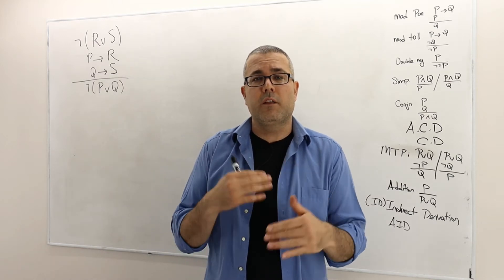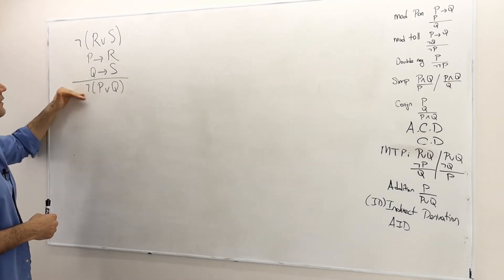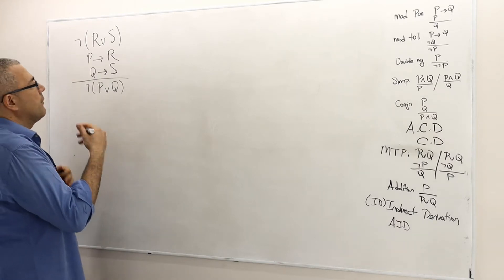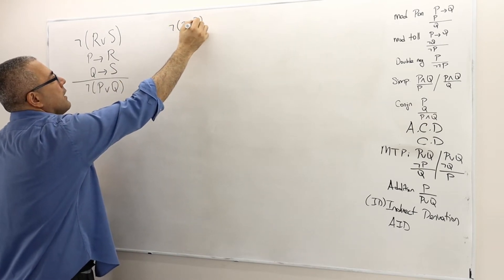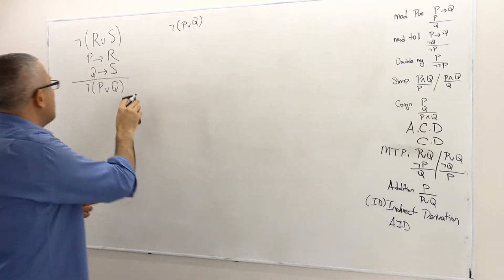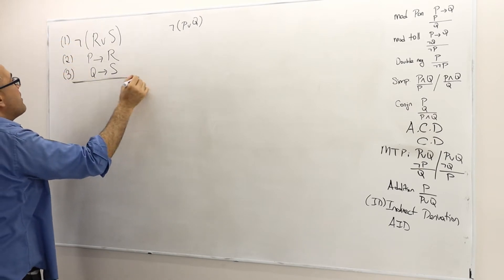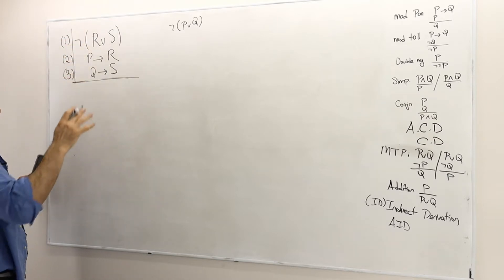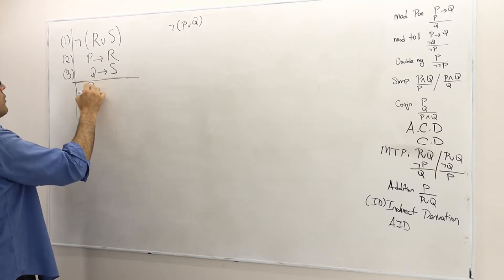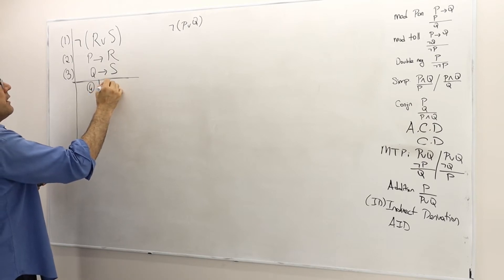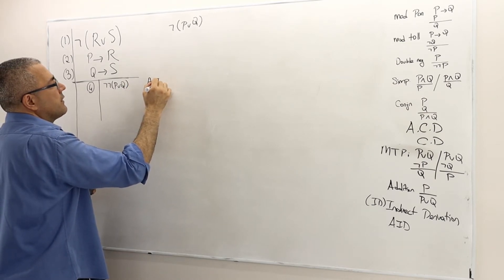We are going to solve another example where we have an argument with three premises, and this is the conclusion. So how do we prove it? I'm going to prove it with indirect derivation, so let me note the conclusion: not P or Q. I'm going to start by numbering the premises, and then in line four I am going to assume the negation of my conclusion. This is assumption for indirect derivation.